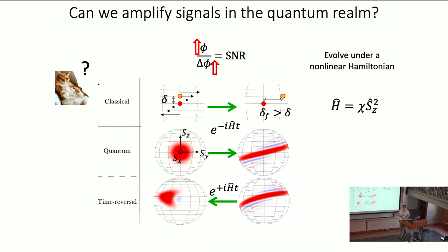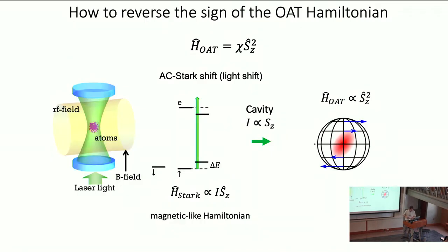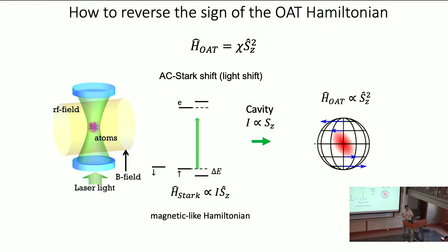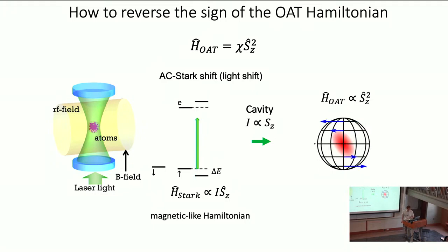The answer is yes. With a classical S_Z^2 Hamiltonian — a nonlinear Hamiltonian — I have a certain displacement delta. Letting the system evolve a little, I get a displacement larger than delta, so I can amplify my signal. But in quantum mechanics, even if I improve the signal in one direction, the noise increases a lot. However, if I can reverse time in my system after introducing the signal, I can amplify the signal a lot while keeping essentially the same noise — increasing the signal-to-noise ratio by reversing time, which just means changing the sign of the Hamiltonian. In our system with atoms in a cavity, when light is on they evolve under this nonlinear Hamiltonian. If I detune the light on the opposite side, the light shift has the opposite sign and I shear in the opposite direction — putting a minus in front of the Hamiltonian and undoing the evolution.